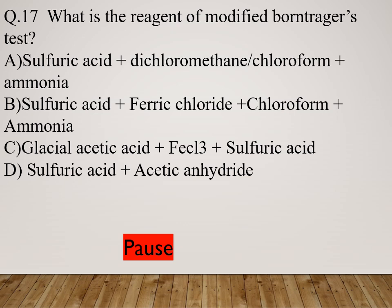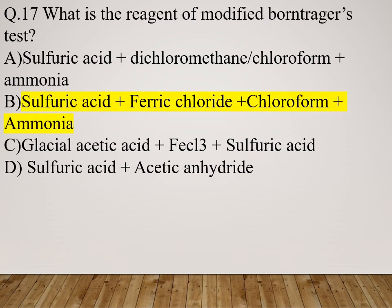Question 17: What is the reagent of the modified Brontega test? Option A: Sulfuric acid + dichloromethane + chloroform + ammonia. Option B: Sulfuric acid + ferric chloride + chloroform + ammonia. Option C: Glacial acetic acid + FeCl3 + sulfuric acid. Option D: Sulfuric acid + acetic anhydride. The right answer is sulfuric acid + ferric chloride + chloroform + ammonia.